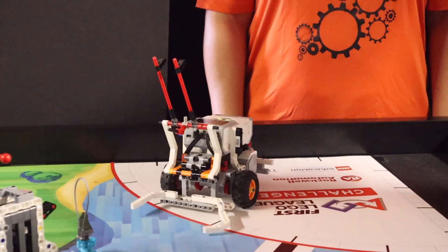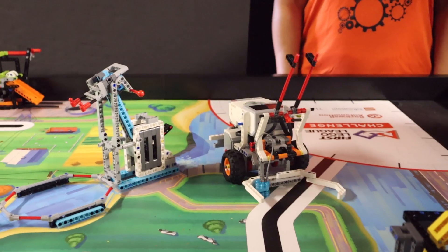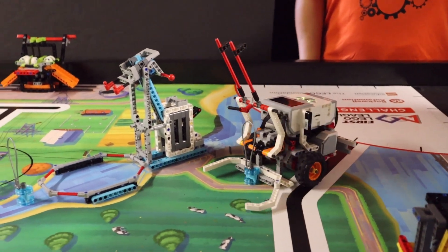Like our Spike Prime, our EV3 circles clockwise around the water reservoir to collect the three looped water units with its bumper attachment.